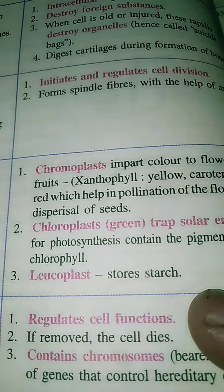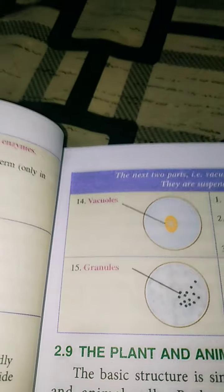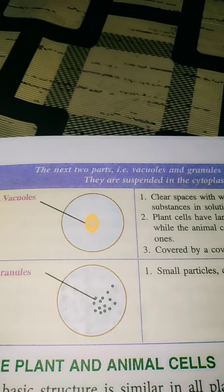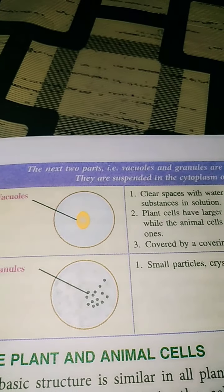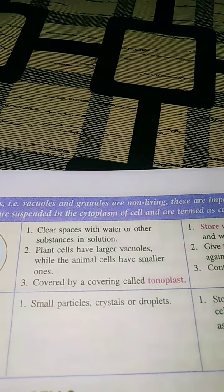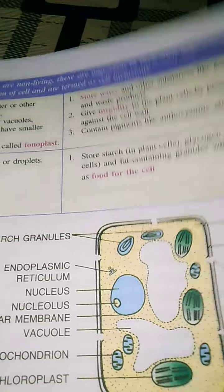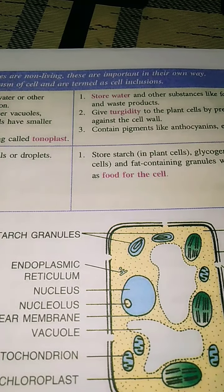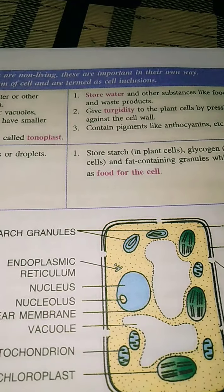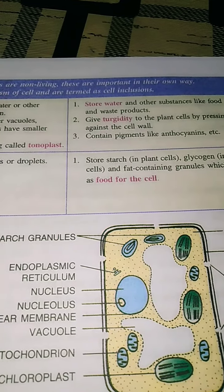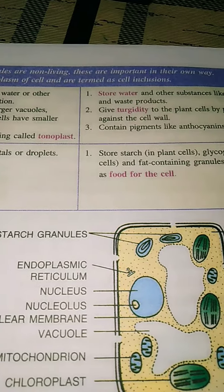Now we move to vacuoles. Vacuoles are large spaces present in the cells of certain plants and very rarely in animals. It is a clear space filled with water or other substances in solution. The main functions of vacuoles are storage of water, giving turgidity to the plant cell, elimination of waste materials, and storage of food materials. In plant cells, vacuoles are large and few in number; in animal cells, they are very rarely available and are simply scattered in the cytoplasm.